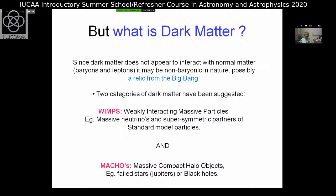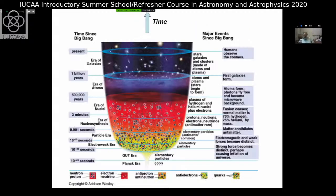Since dark matter does not interact with normal matter — protons, electrons, neutrons — what is it? Most people believe it's a relic from the Big Bang. Two categories have been suggested: WIMPs and MACHOs. WIMP stands for Weakly Interacting Massive Particle — an elementary particle that is massive but not massless. MACHO stands for Massive Compact Halo Object — this could be a failed star like a Jupiter object or a black hole. As you go back in time, different bits of particle physics come into play, and if you believe in WIMPs, some relics from very early times survived and became dark matter today.